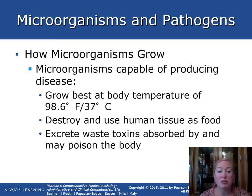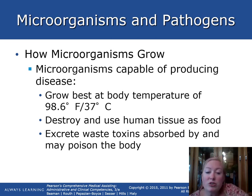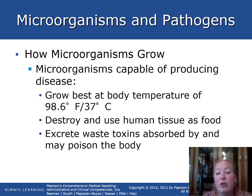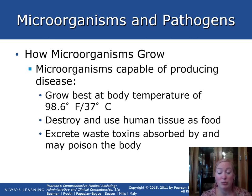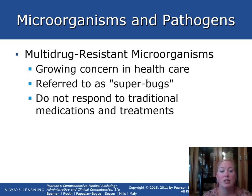Microorganisms capable of producing disease grow best at body temperature. They destroy and use human tissues as food, and they excrete waste toxins that are absorbed by and may poison the body. In sepsis or septic shock, a bacterial infection has spread through the bloodstream and is producing toxins that affect the whole body.